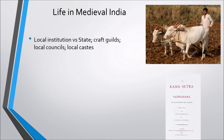Local institutions played a much larger role in the lives of the overwhelming majority of people in medieval India than did the state. Craft guilds oversaw conditions of work and trade, local councils handled law and order at the village level, and local castes gave members a sense of belonging and identity.